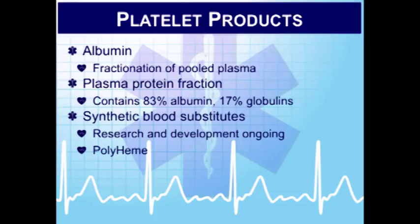Albumin doesn't require ABO or RH compatibility checking and is taken from pooled plasma. It comes in a 5% and a 25% solution. The 25% solution draws fluid from the extravascular space into the vascular system — it produces five times its volume from extravascular water — so you don't need a lot of fluid, but watch carefully for heart failure since large amounts of extravascular fluid are now shifted into the vascular system. It's used in trauma patients, burn patients, sepsis, and surgical patients.